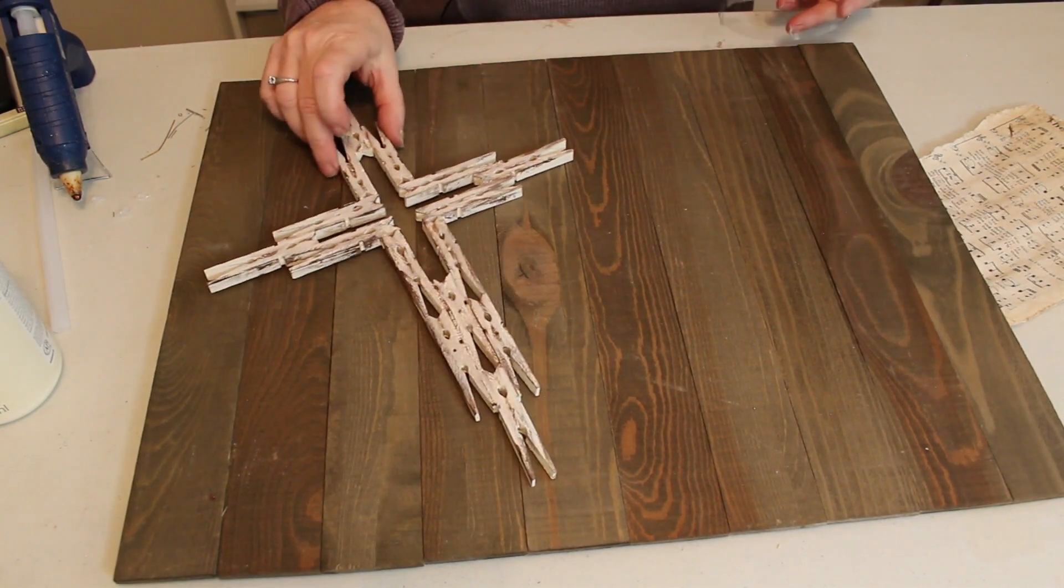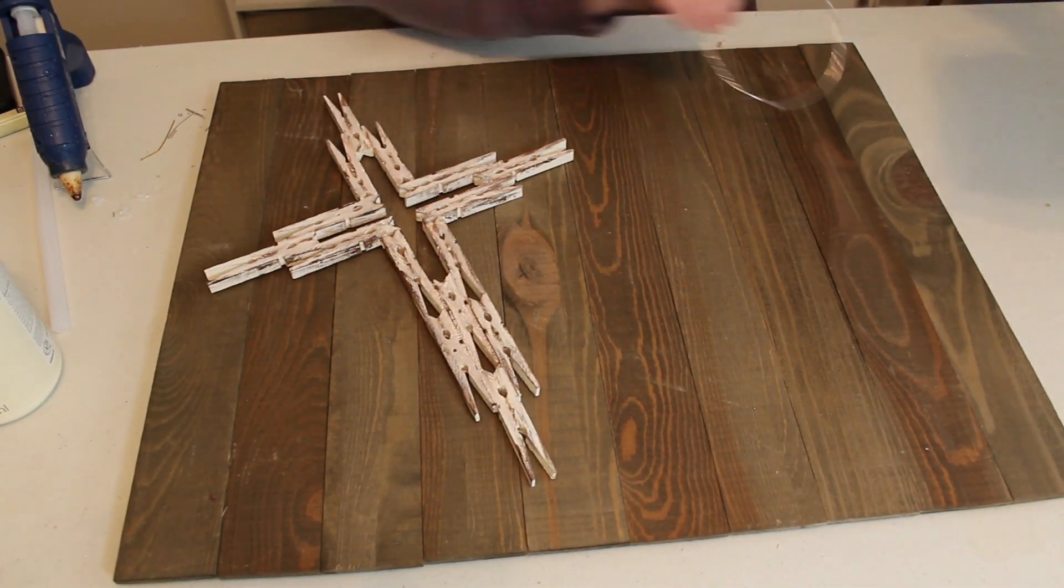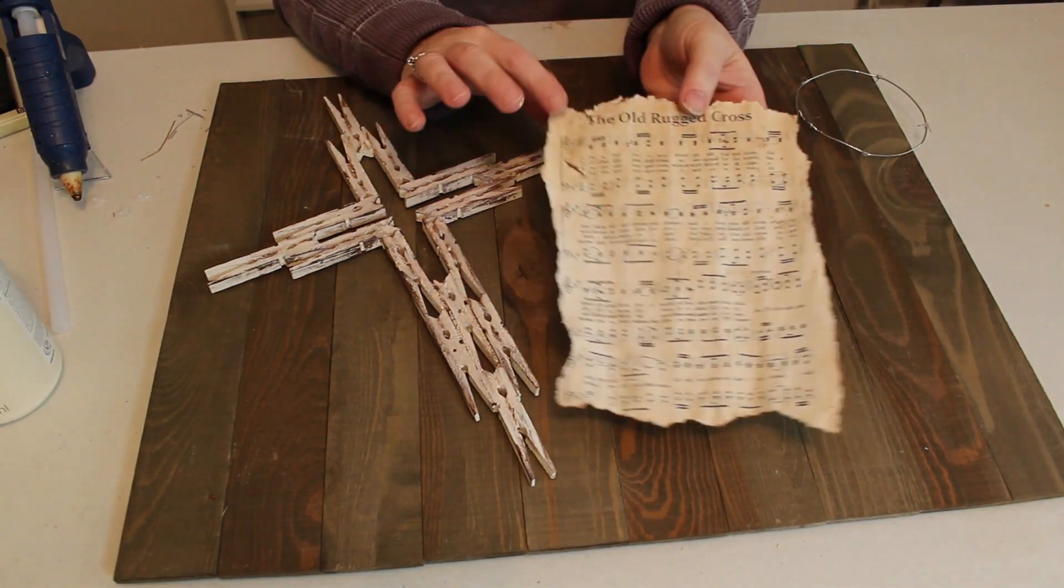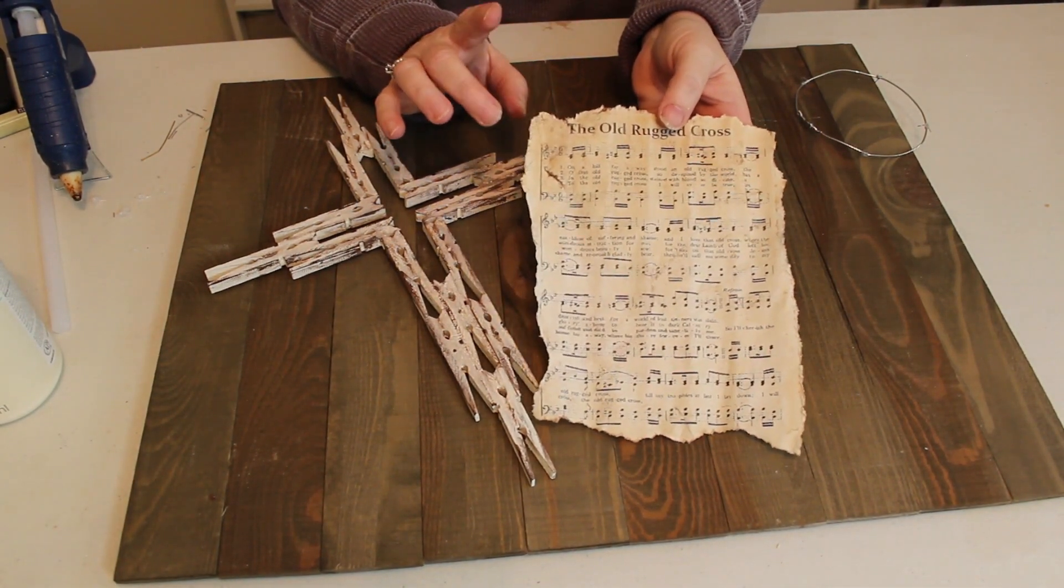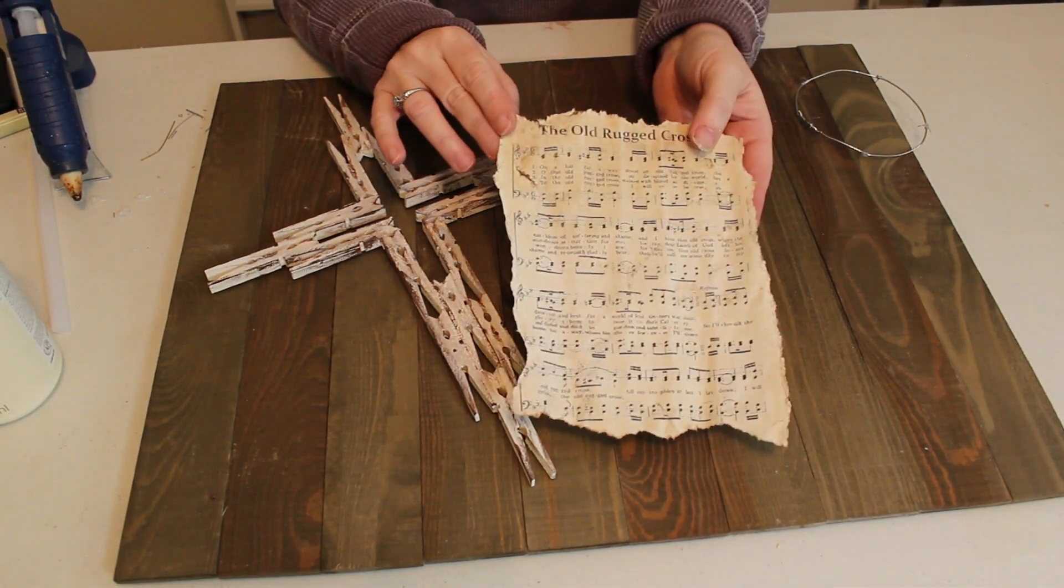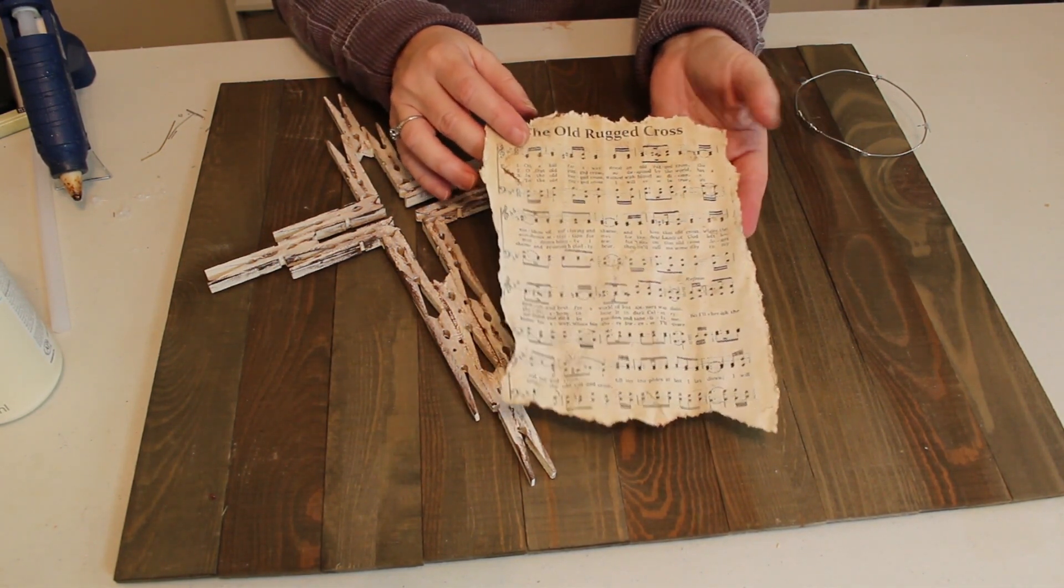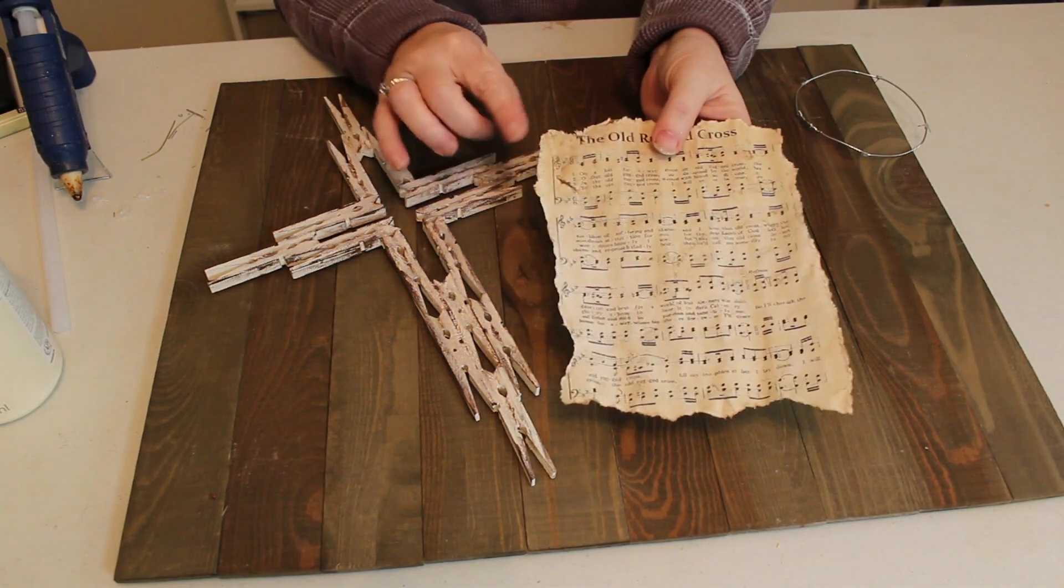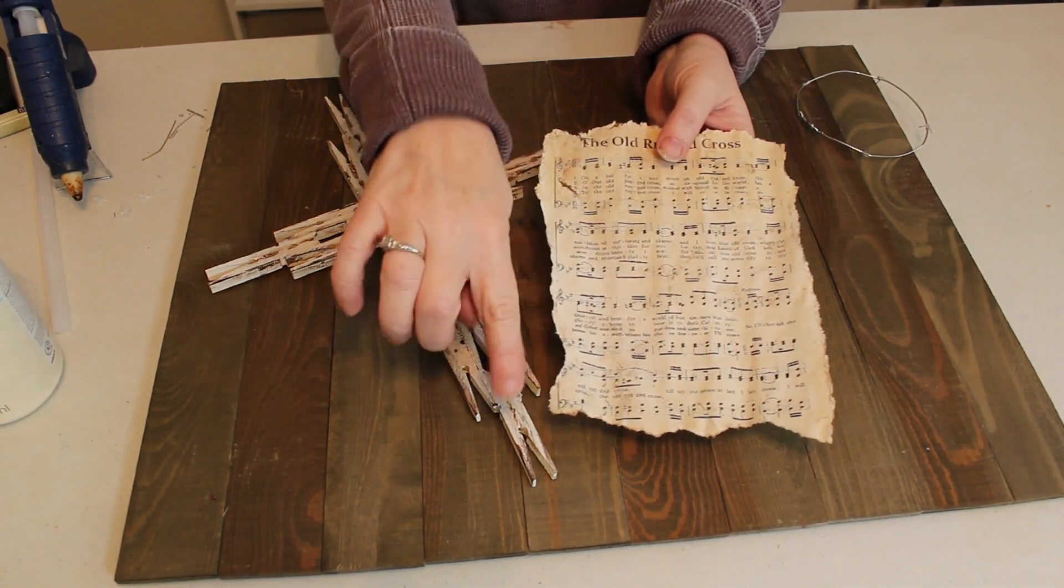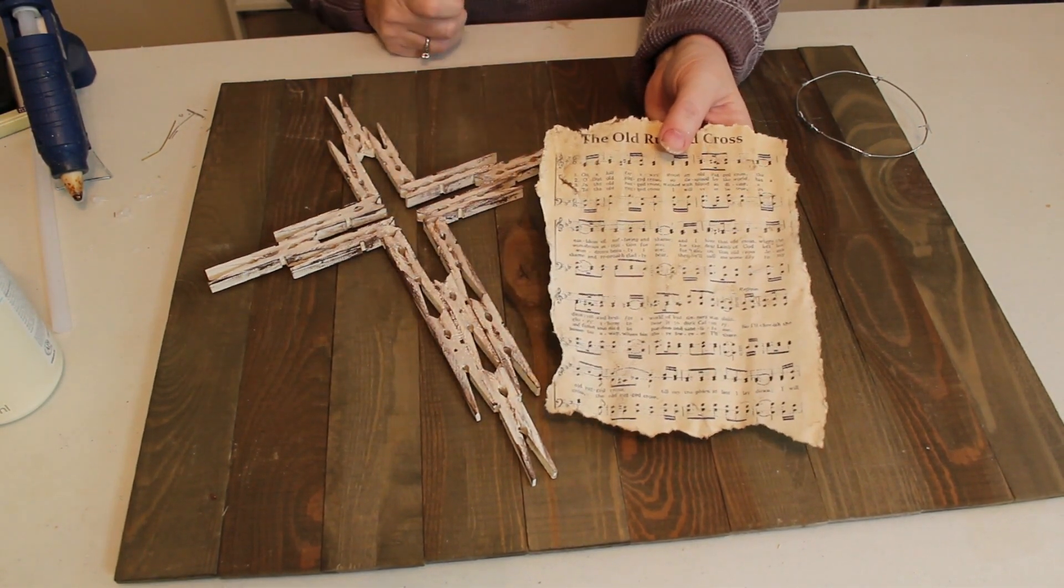So I'm going to put my cross there. I went online and I googled the sheet music for the old rugged cross. I printed it off on my printer. I soaked it in some old coffee to coffee stain it and while it was wet I gently tore the edges to give it that ragged look.